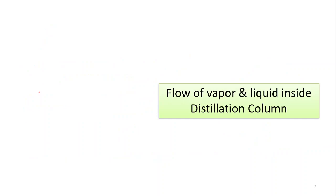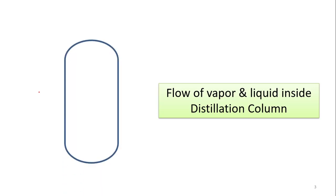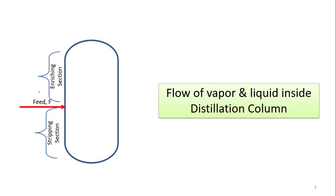Now let us look at what is going on in the distillation column — specifically the flow of vapor and liquid inside it. This is a simple distillation column where the feed is charged into the column. The upper portion above the feed is known as the enriching section, and the lower portion is known as the stripping section. So there are two parts of the column: the enriching section and the stripping section.